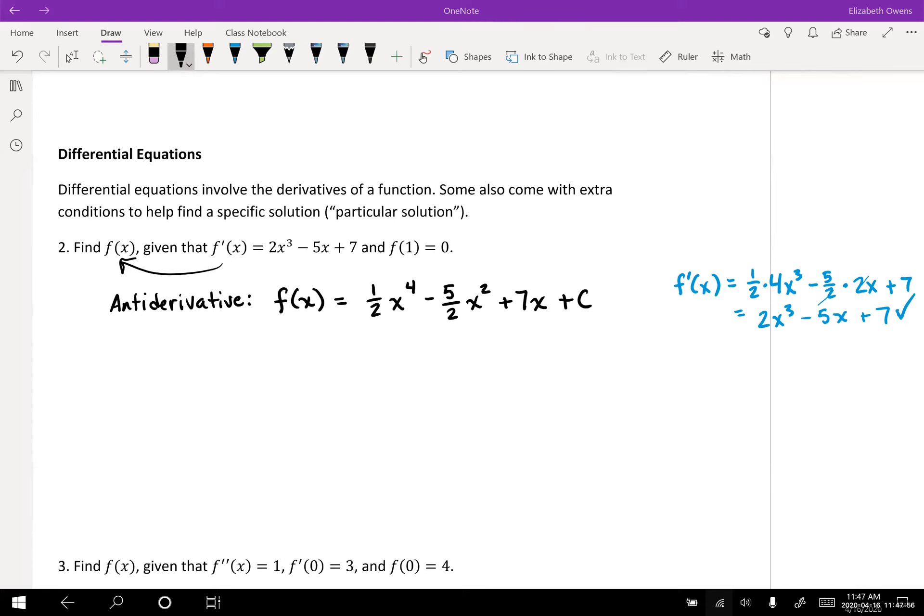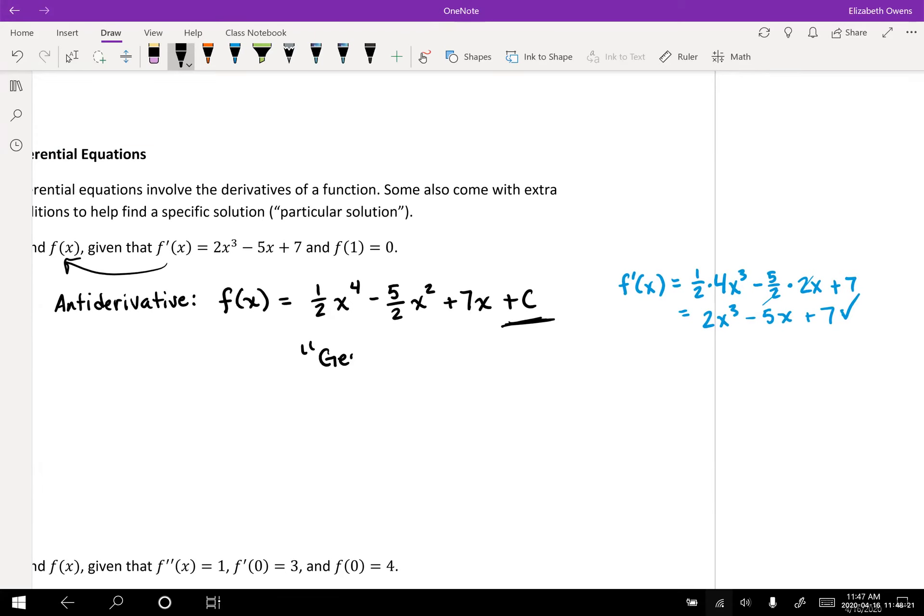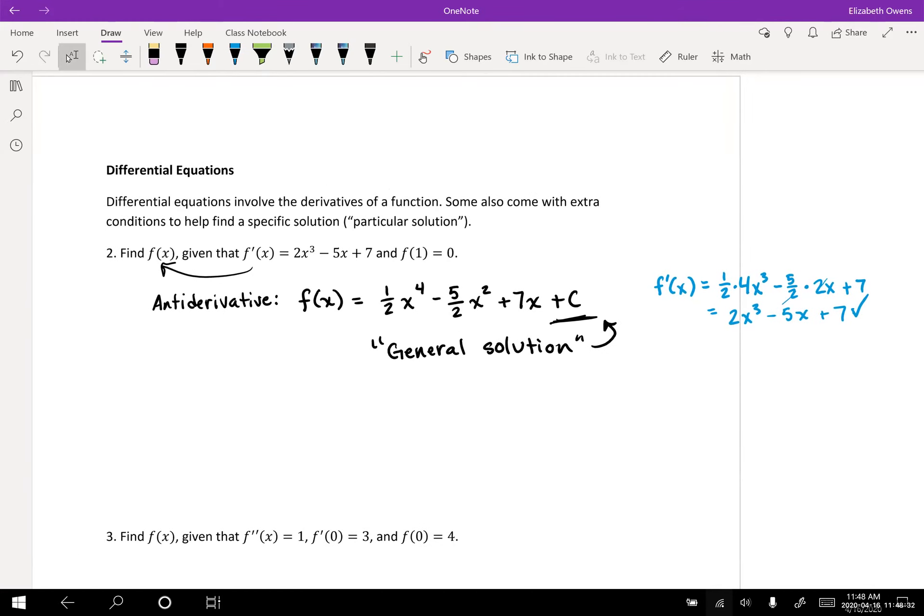All right, so that is our antiderivative. And to find the solution with f of one equals zero set f of x equal to zero. Yeah, you know where we're heading with this. Yes, you do. Very good. And so yeah, what we found here. This is the general antiderivative, because we have that general generic plus c constant on the end. So this is called the general solution. Okay, with the plus c on there.